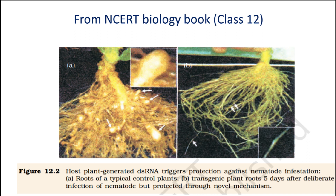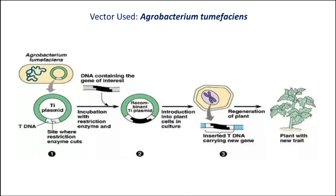The transgenic plant therefore got itself protected from the parasite. This picture is collected from the NCERT biology book. On the left-hand side we can see the roots of typical control plants, and on the right-hand side we can see the transgenic plant roots five days after deliberate infection of nematode, but protected through this novel mechanism.